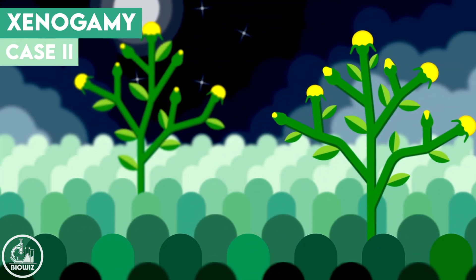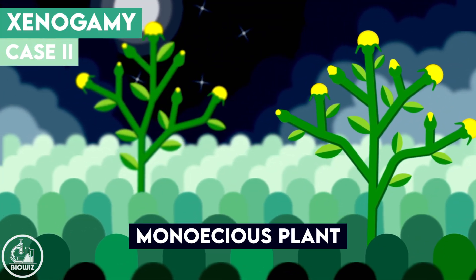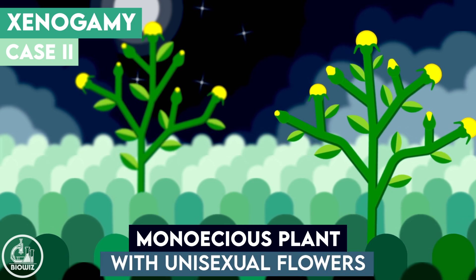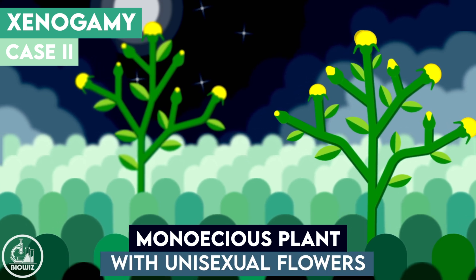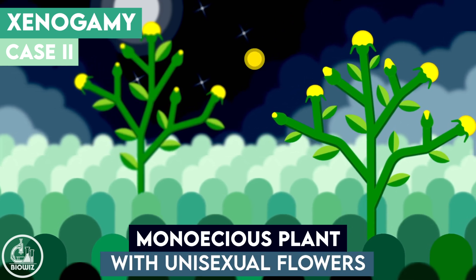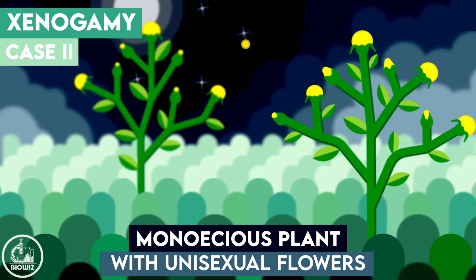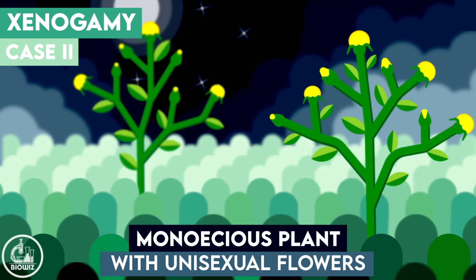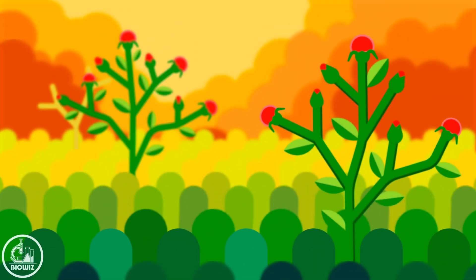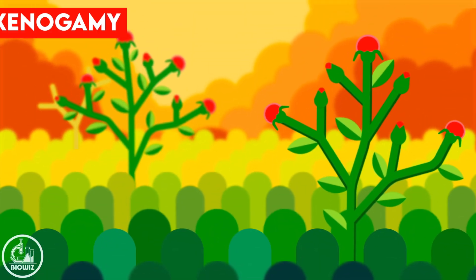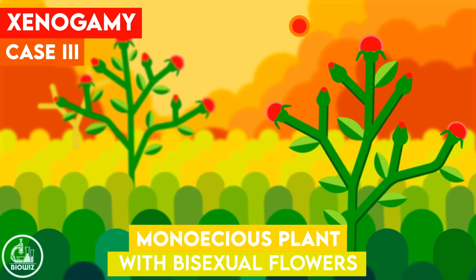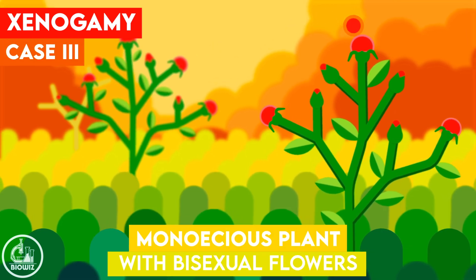The second case is when the plant is monoecious having unisexual flowers. It is possible that any pollinating agent carries pollen from one plant and transfers it to a different plant. And lastly, bisexual plants can also perform this type of pollination.